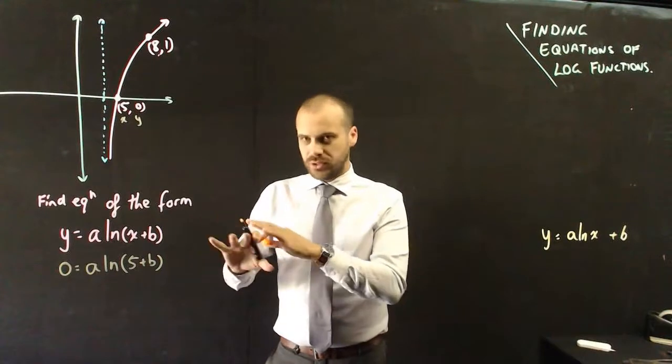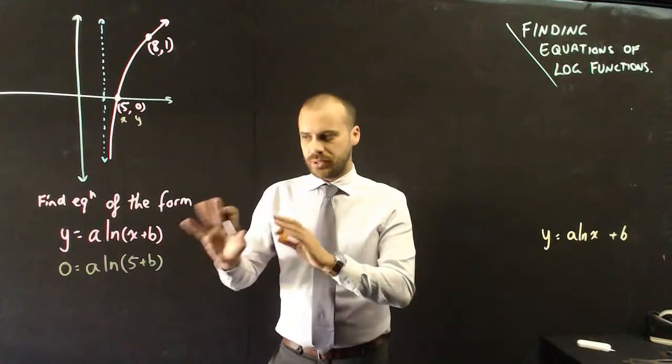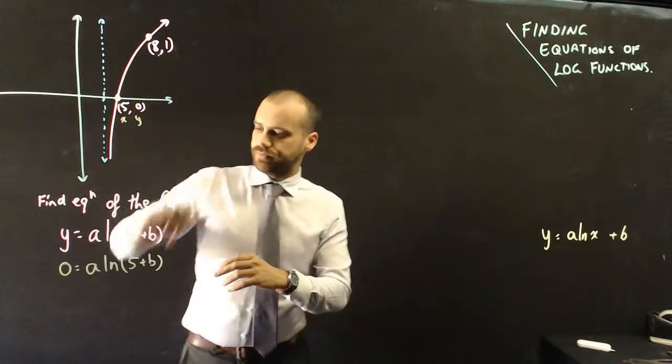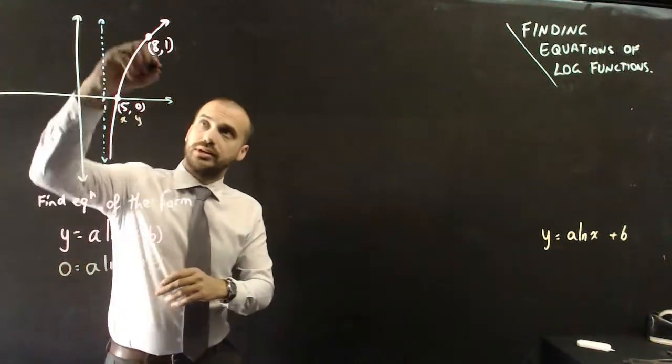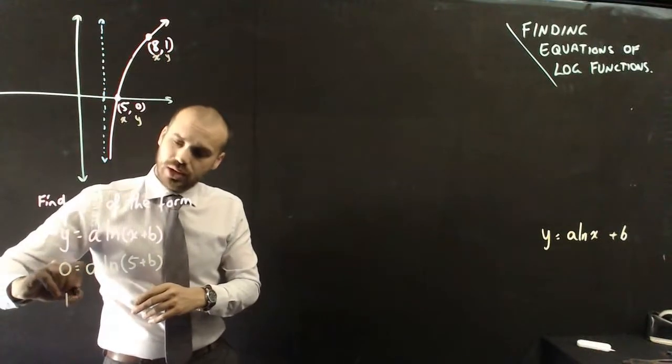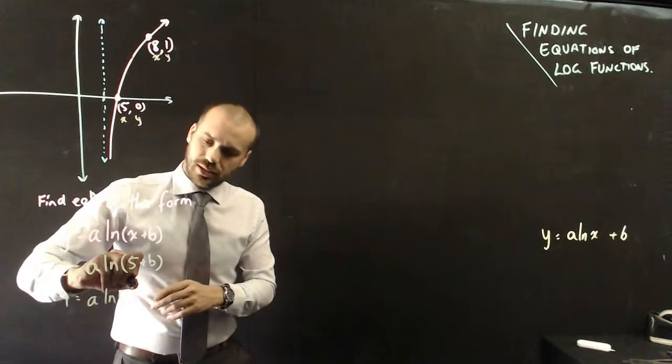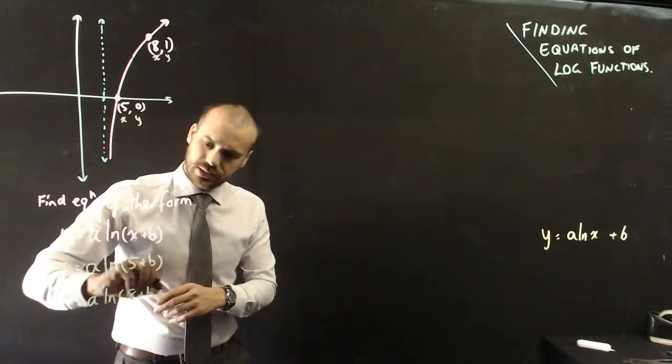That's a pretty good step. Not immediately apparent I'm going to be able to do anything with that, but I'll just leave it as it is for now. And I'm also going to sub that one in. So that's the x value and that's the y value. So 1 equals a ln(8) plus b.